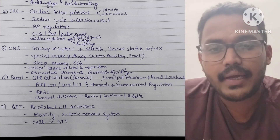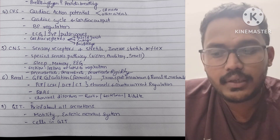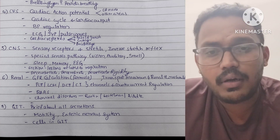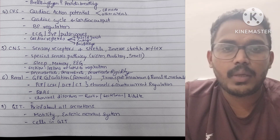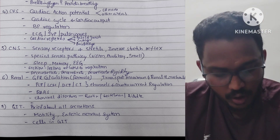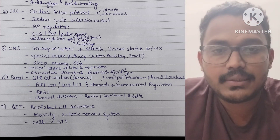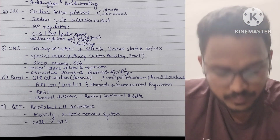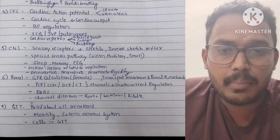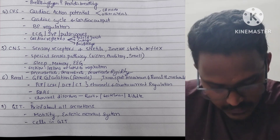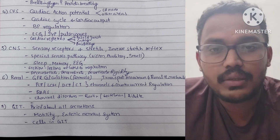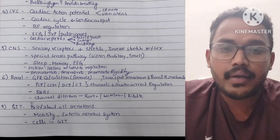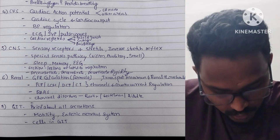Decerebrate and decorticate rigidity and their signs are very important. In the renal system: GFR-related formulas and problems are important, along with all channels and the counter-current mechanism along the loop of Henle, PCT, and DCT. The RAA system is important. Channel disorders — Bartter, Liddle, and Gitelman syndromes — are important. In GIT: all secretions, cell types, motility, and enteric nervous system-related topics are important.